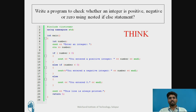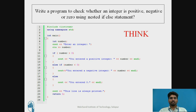Else if the number is less than 0, the output is 'you entered a negative integer'. Otherwise, the output is 'you entered a 0'. Lastly, 'this line is always printed' is output. So here if, else-if, and else are used — this is the example of nested if-else.